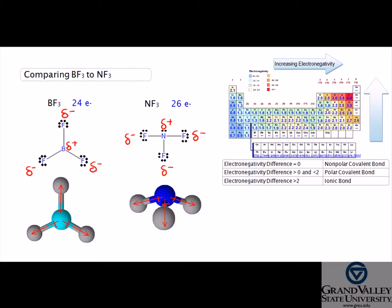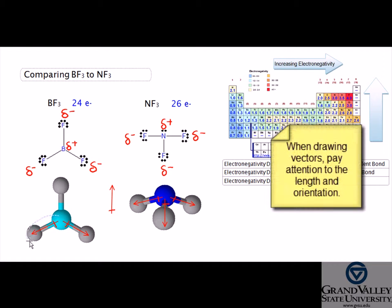To determine if the molecule has a net dipole, add the vectors together. Begin by drawing the first vector, paying attention to the length and the orientation. Then continue by drawing the second vector, starting from the head of the previous vector. Continue to draw vectors until all are used.